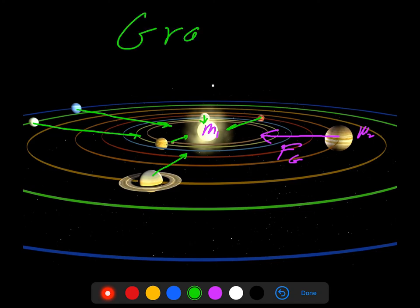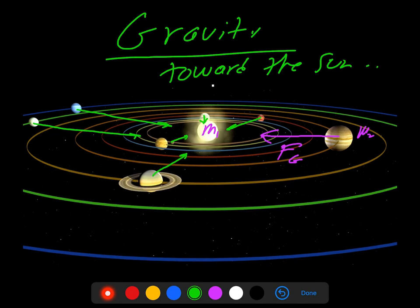So really, the solar system is held together by gravity. In this case here, always toward the sun. Okay, more to come.